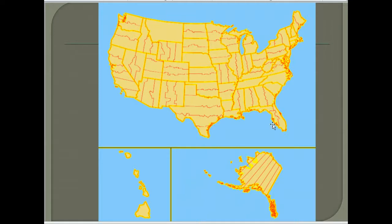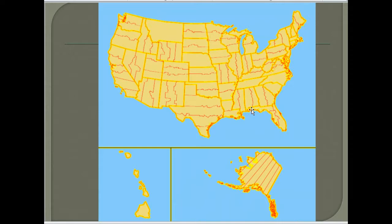In Florida, three zones were created. Two of those zones use the Mercator projection because they run more linearly north-south, allowing a long meridian down the center. But in the Florida panhandle section, a conic projection — the Lambert projection — was used.